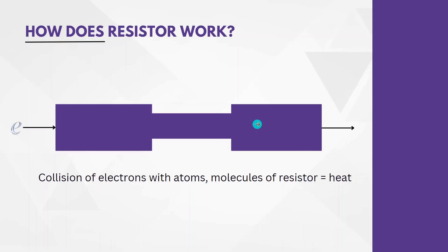But once the electrons are out of the resistor, the flow will be normal. So it does not reduce the amount of current in the circuit, but it will just block the flow of electrons within itself. Collision of electrons with atoms and molecules of the resistor will produce some energy, and that energy is in the form of heat energy. So some amount of energy from the battery is being used up in the form of heat.